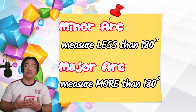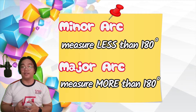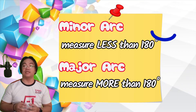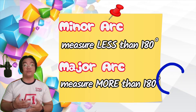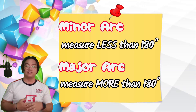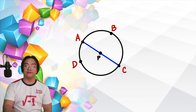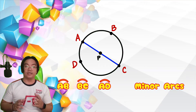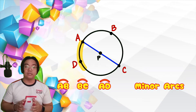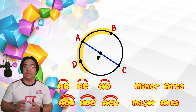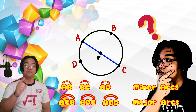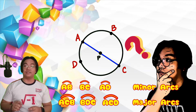A minor arc is an arc whose measure is less than 180 degrees, while a major arc is an arc whose measure is greater than 180 degrees. Both minor and major arcs are named using two points on the circle. For example, arc AB, arc BC, and arc AD are all minor arcs, wherein arc ACB, arc BDC, and arc ABD are major arcs. Can you name the other minor and major arcs you see in this figure?